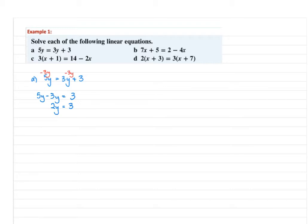In the next step, 2 times y is equal to 3. The inverse operation of multiplication is division, so we divide both sides by 2, and the solution is y equals 3 over 2.